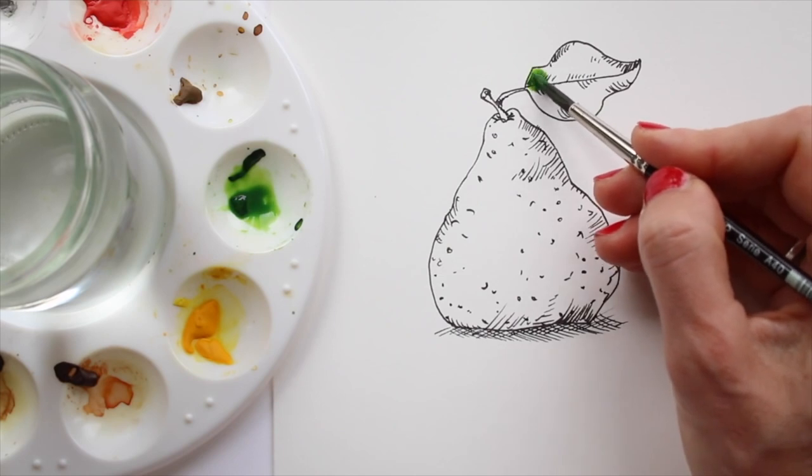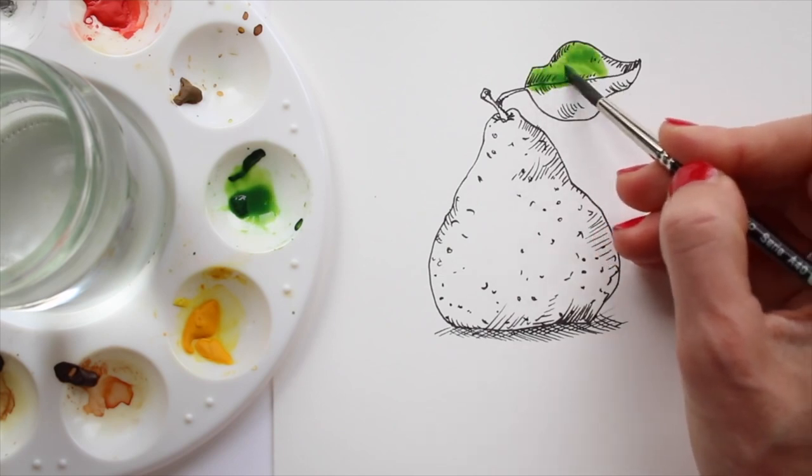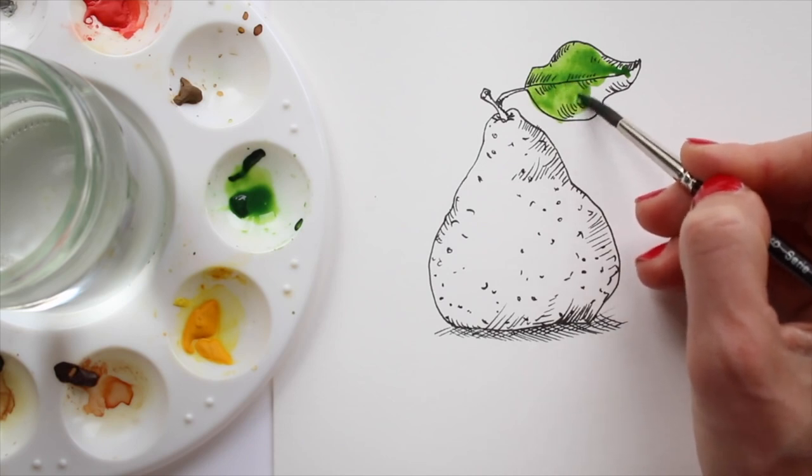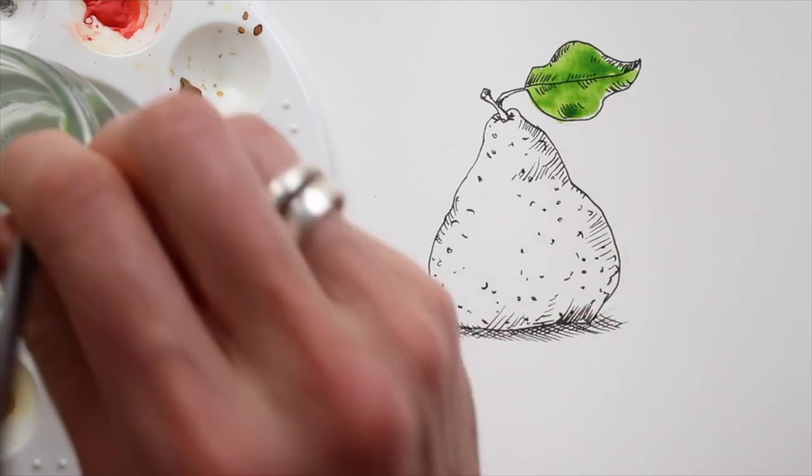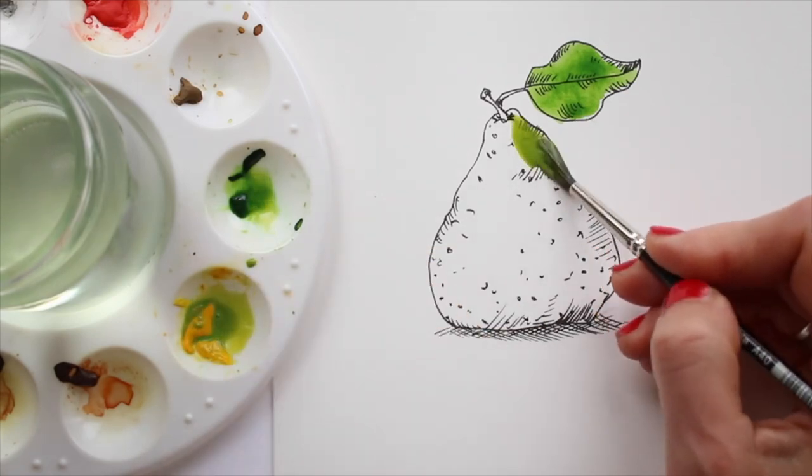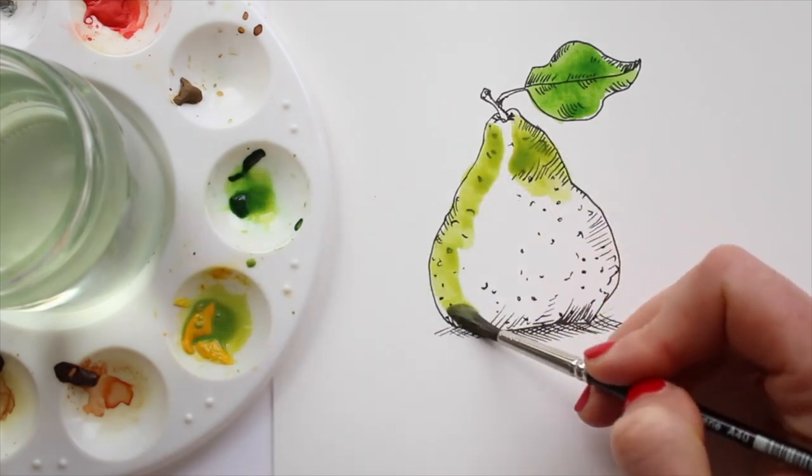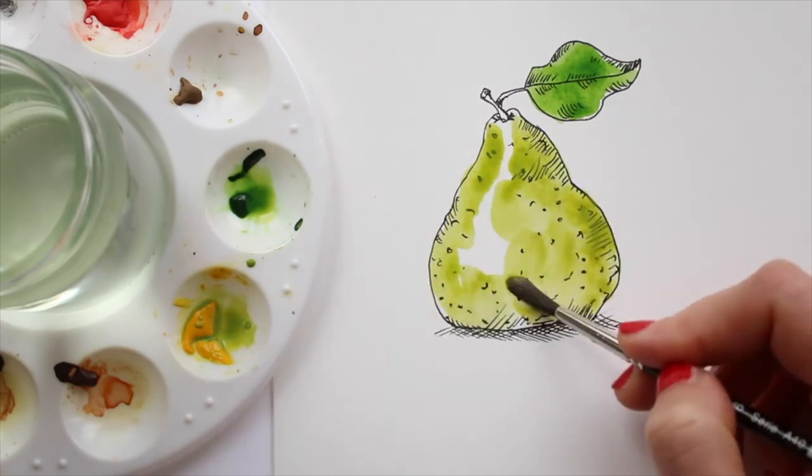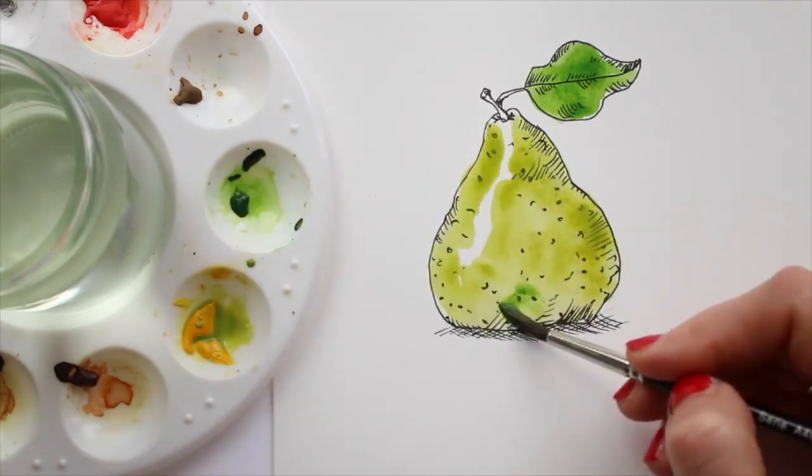Now I am ready to pick up some pigment and color. I use green straight from the tube, but also mix a bit of yellow in to bring more variety and life to the color. I make sure to leave white for the highlighted area on the pear. The white of the paper will create that sense of shine.